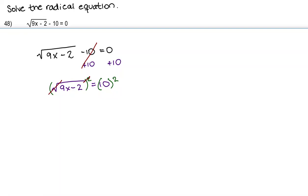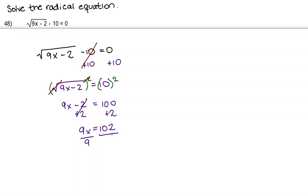That's perfectly fine because we know that 10 squared is 100. On the left-hand side we have 9x minus 2. So we're going to add 2 to both sides, and then since x is being multiplied by 9, we're going to divide by 9. So x is going to equal 102 divided by 9.